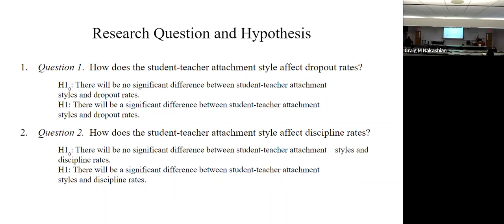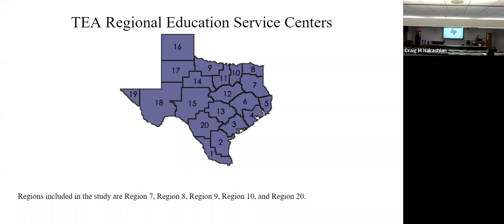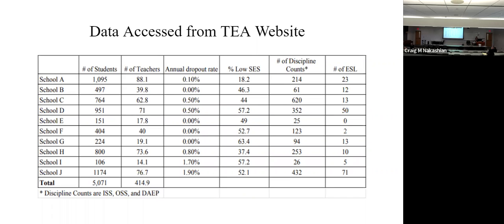I asked two questions: How does the teacher attachment style affect dropout and discipline rates? To give you a little background on Texas education, TEA divided Texas up into 20 regional service areas, and I randomly selected five of them — regions 7, 8, 9, 10, and 20, pulled right out of a hat. I accessed data from the TEA website, sent surveys to schools, and obtained data from 126 different teachers who completed the survey.